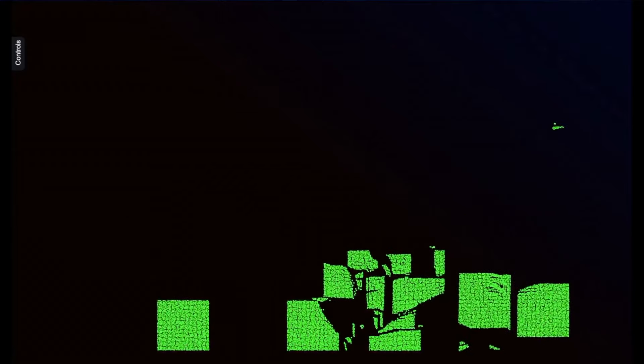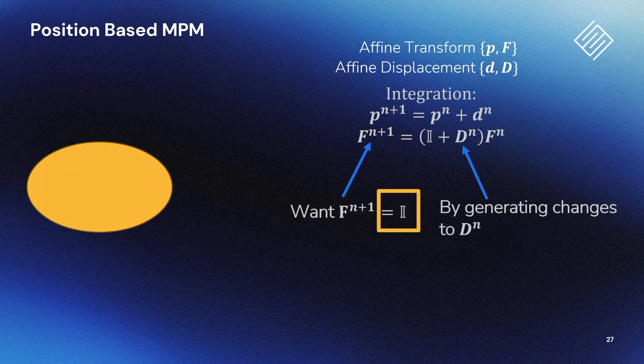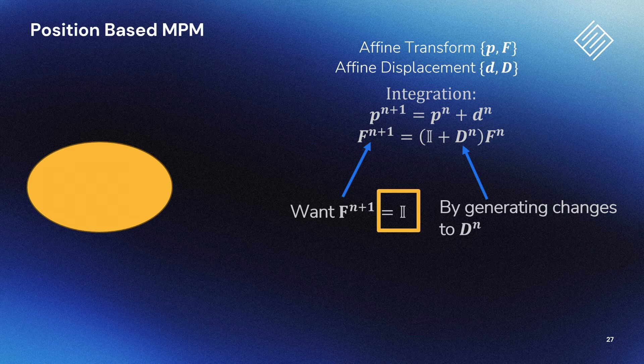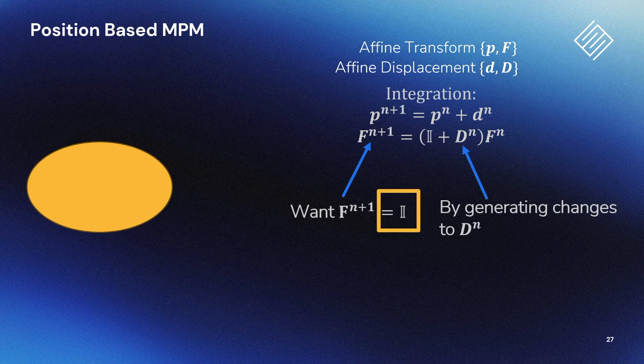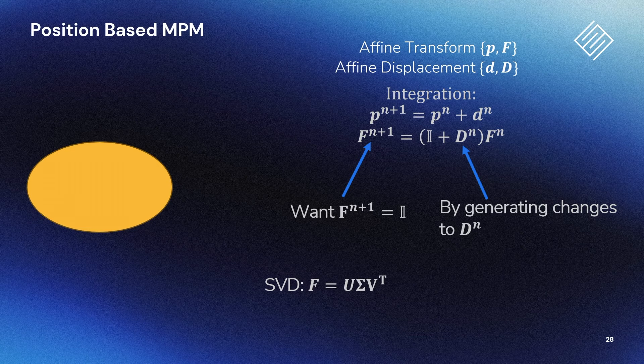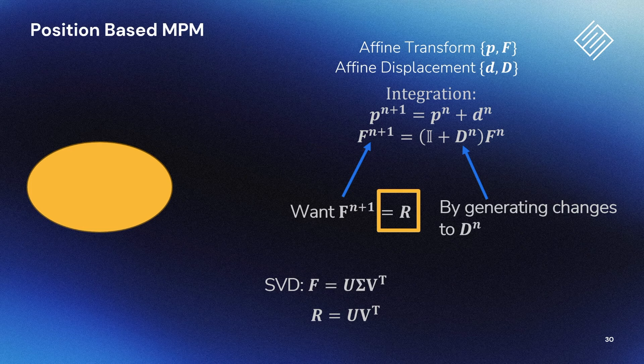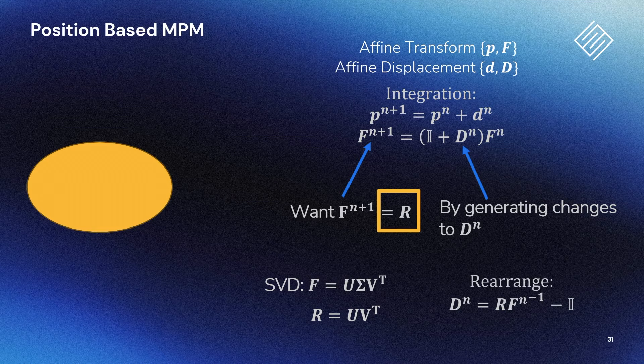So here's a simulation based on the constraint I just showed you. We can see there's clearly something wrong with it. It looks like ghost forces are preventing the blocks from rotating. The problem here is this constraint where we're choosing to drive the transform towards the identity matrix. This causes the body to resist rotation. This is an old problem in solid mechanics simulation that we can solve using a tool called the singular value decomposition or SVD. With the SVD we can decompose the transform into a rotation and scale part. We can get the nearest rotation to F by just dropping the scale. Then if we want the object to be rigid we can just drive it towards this rotation. We can rearrange as before to figure out the displacement required to get to this state. With this change we can see the cubes are nice and bouncy.